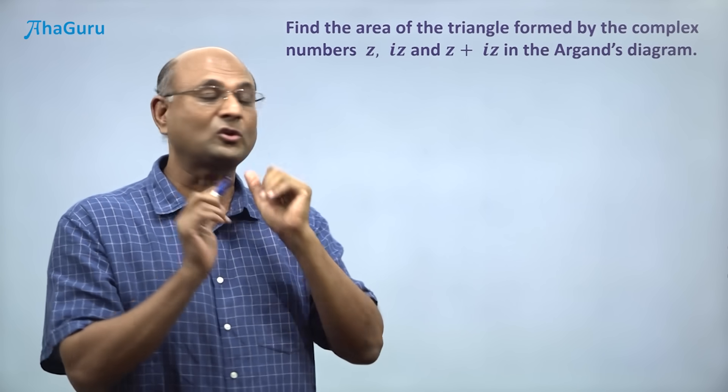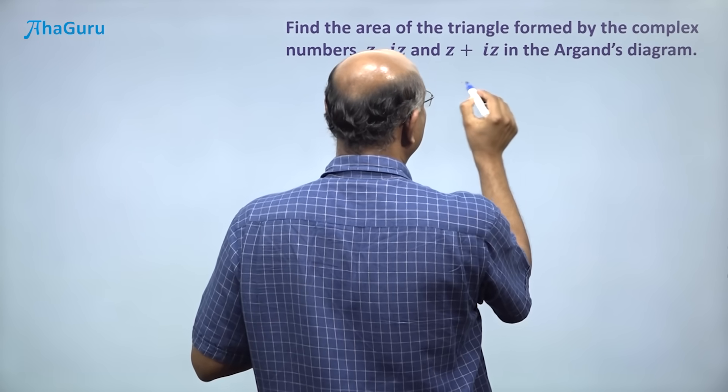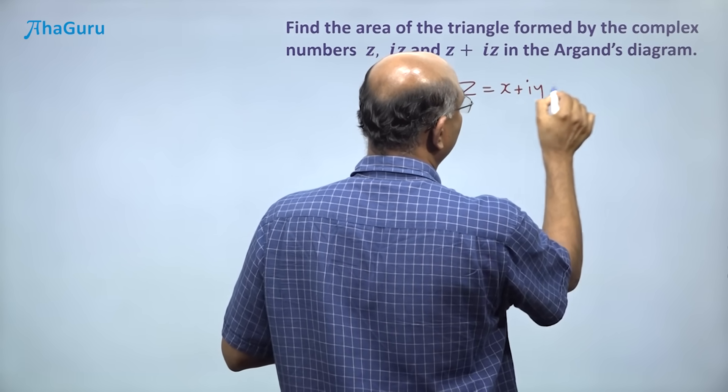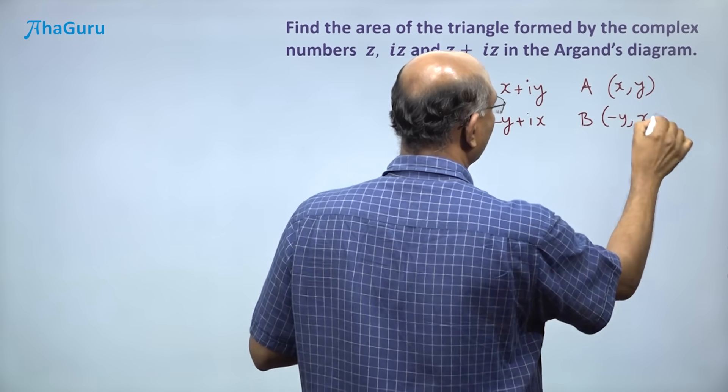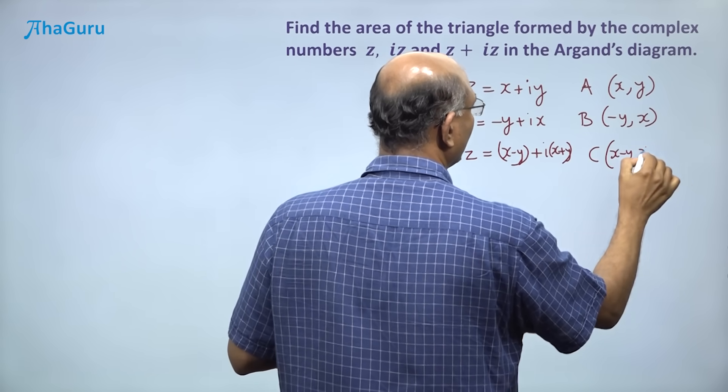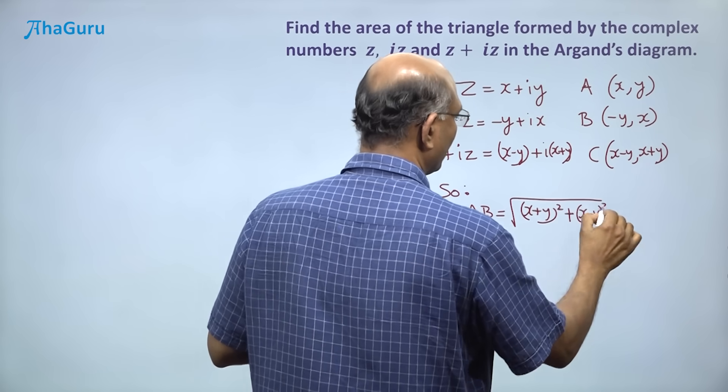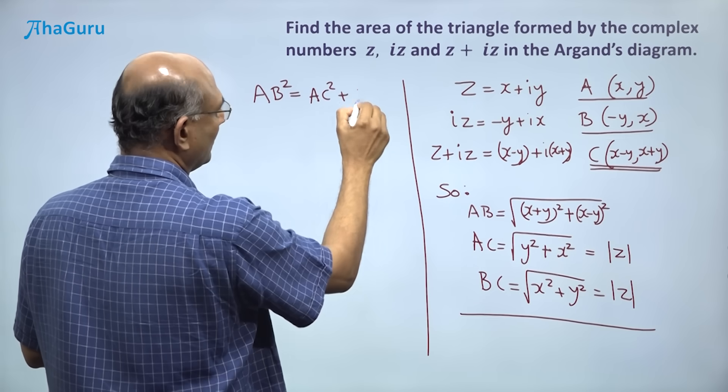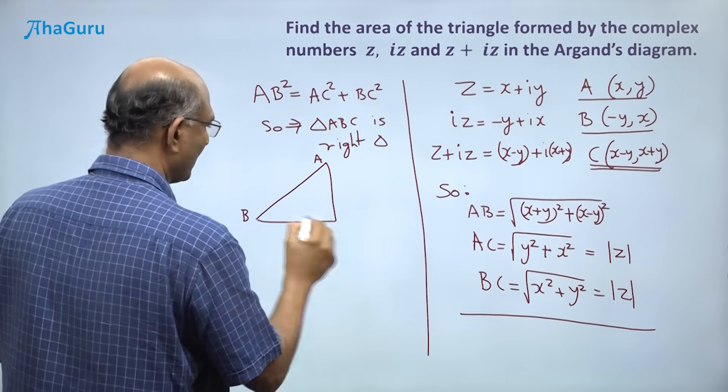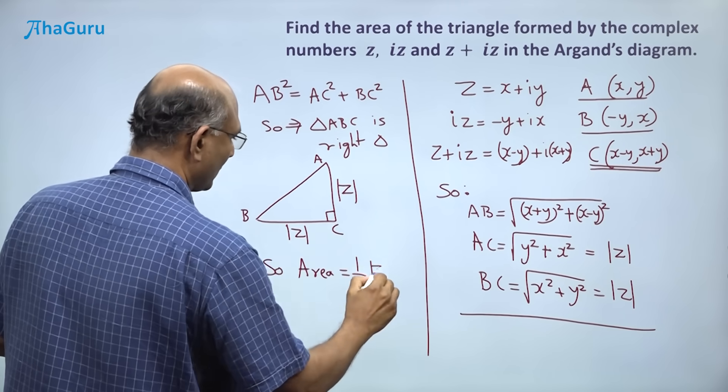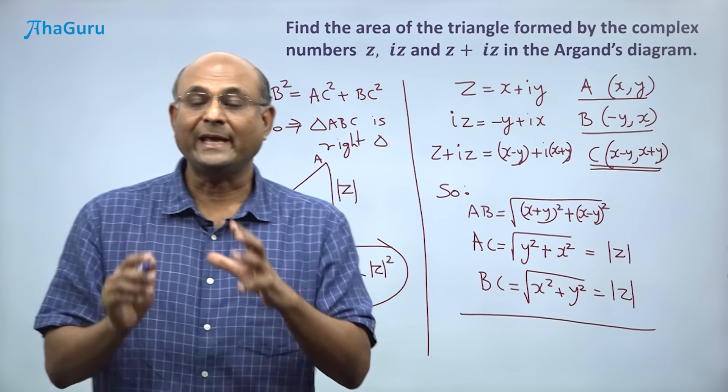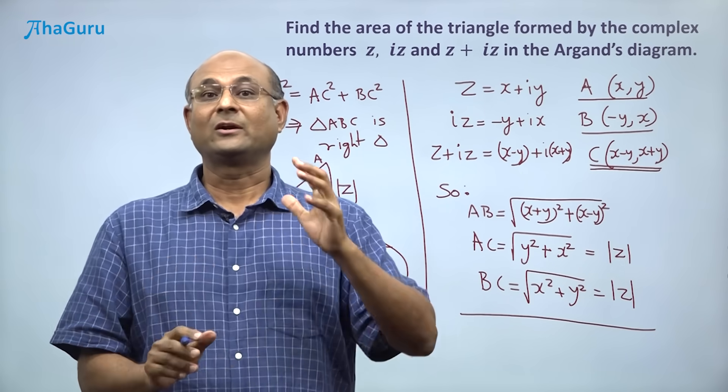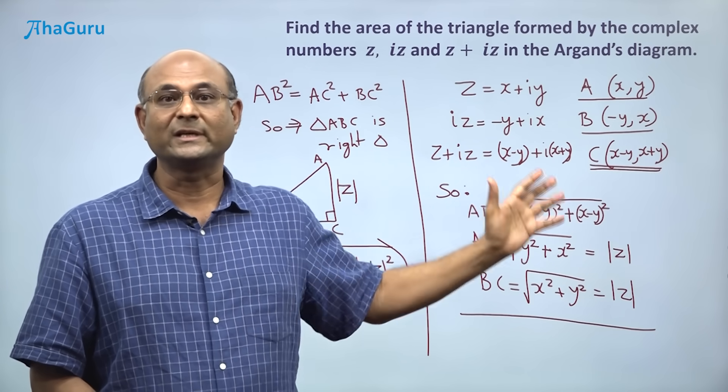The most common way to solve this is to start by writing z equals x plus iy. Using this we can find the vertices of the triangle. After that we can find the length of each side and then of course we can find the area of that right angle triangle. So if you see, it takes us easily 3 minutes to solve the question using this approach.